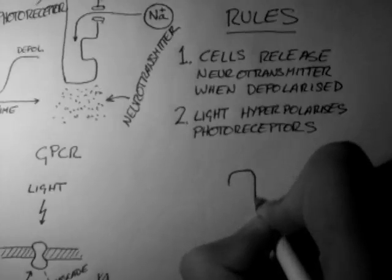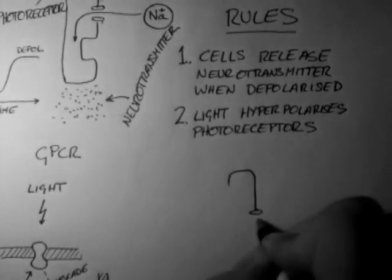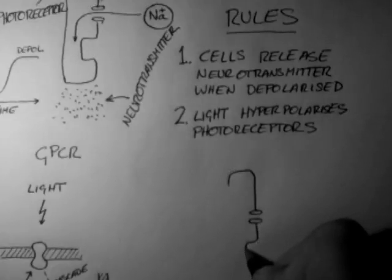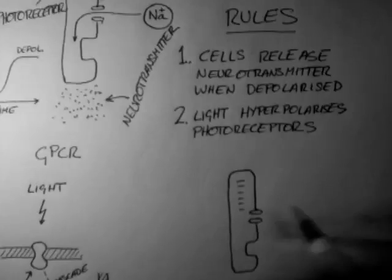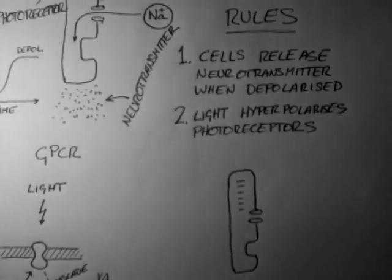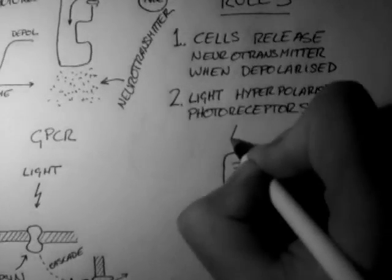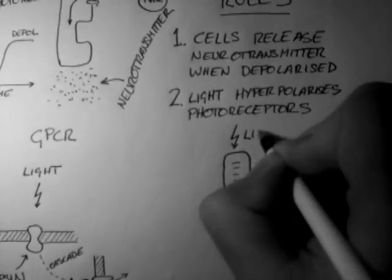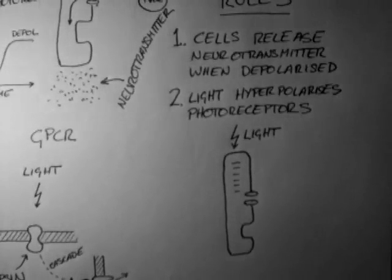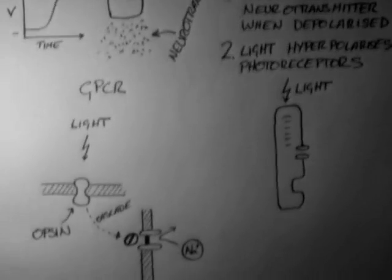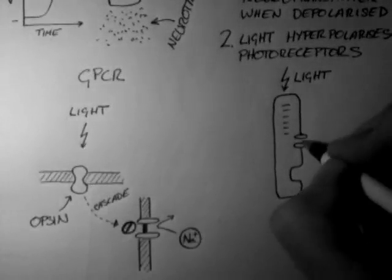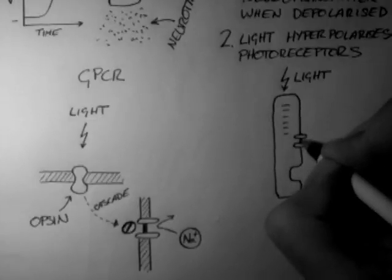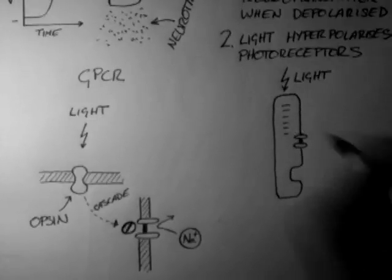So let's look at the situation where light hits a photoreceptor. So here's our light, and it hits the photoreceptor. So this blocks off the sodium channel. So there's nothing happening there.